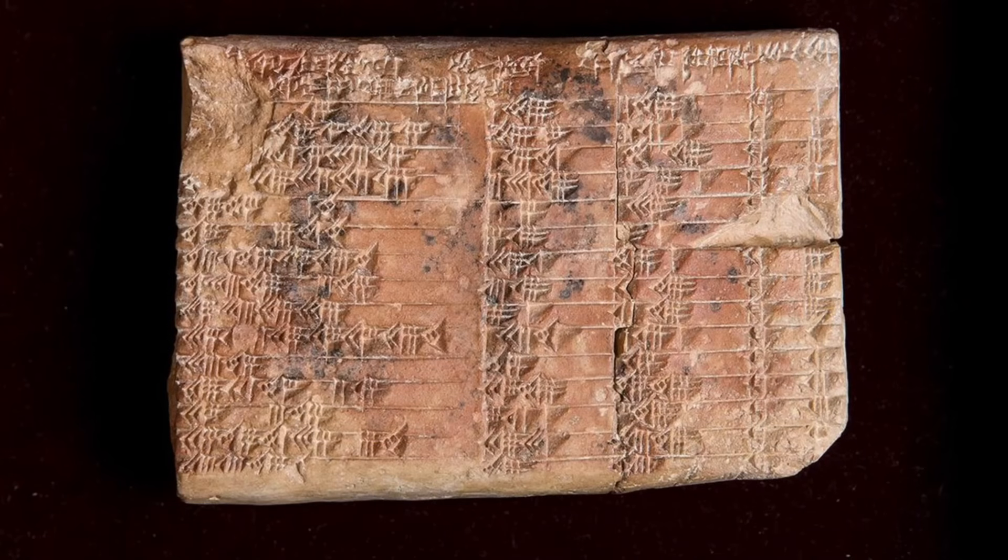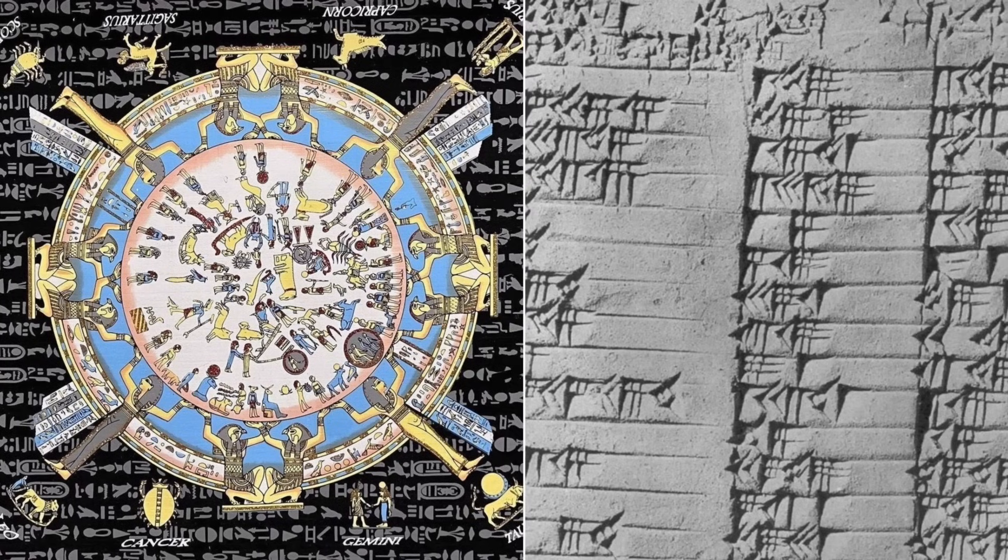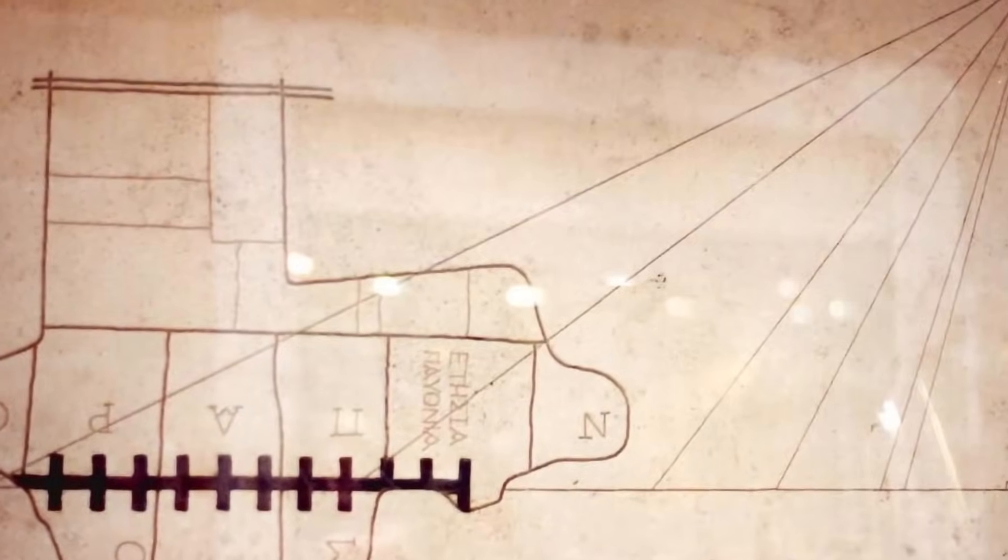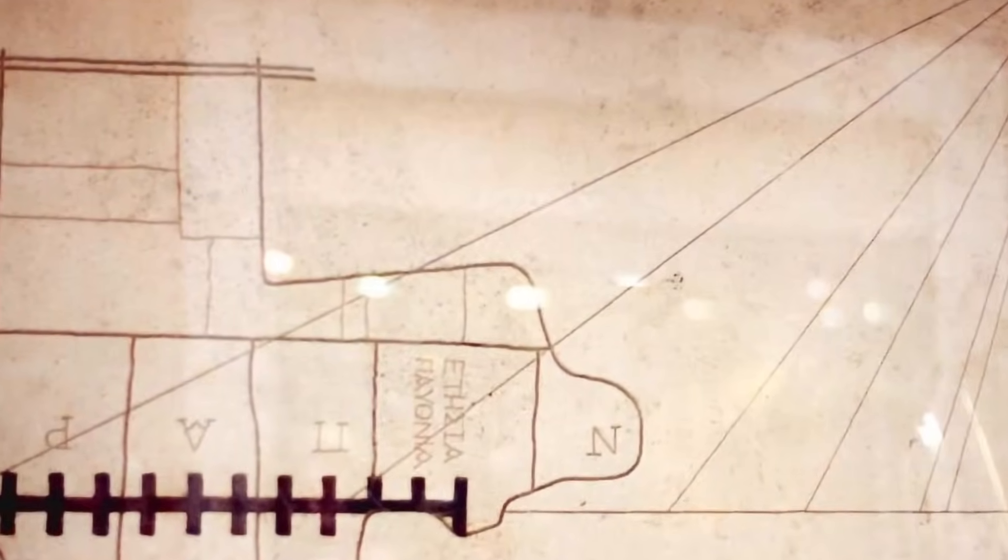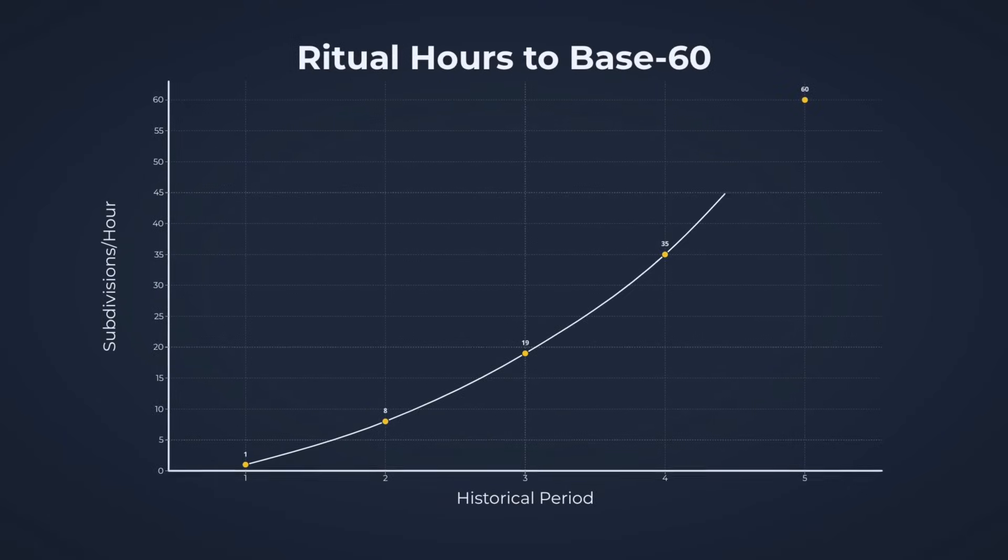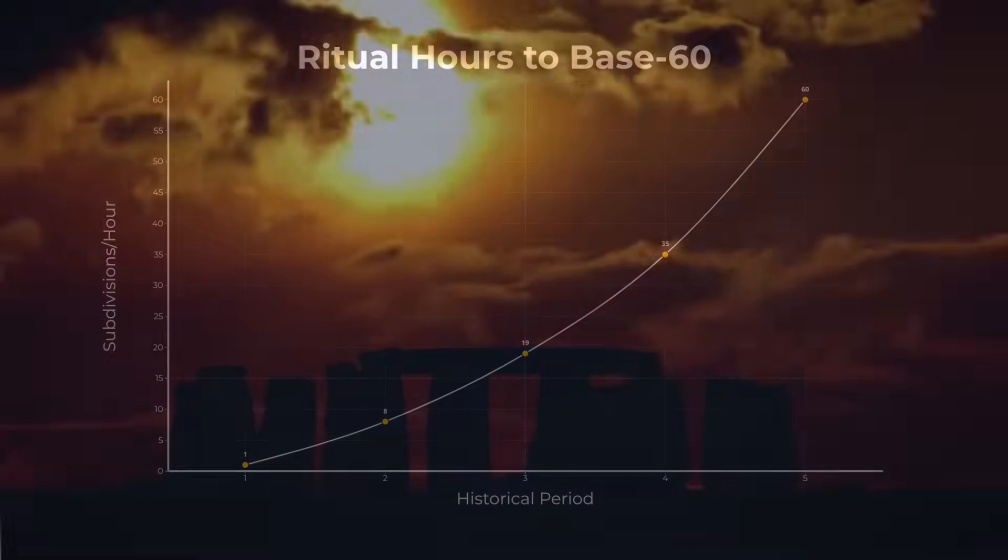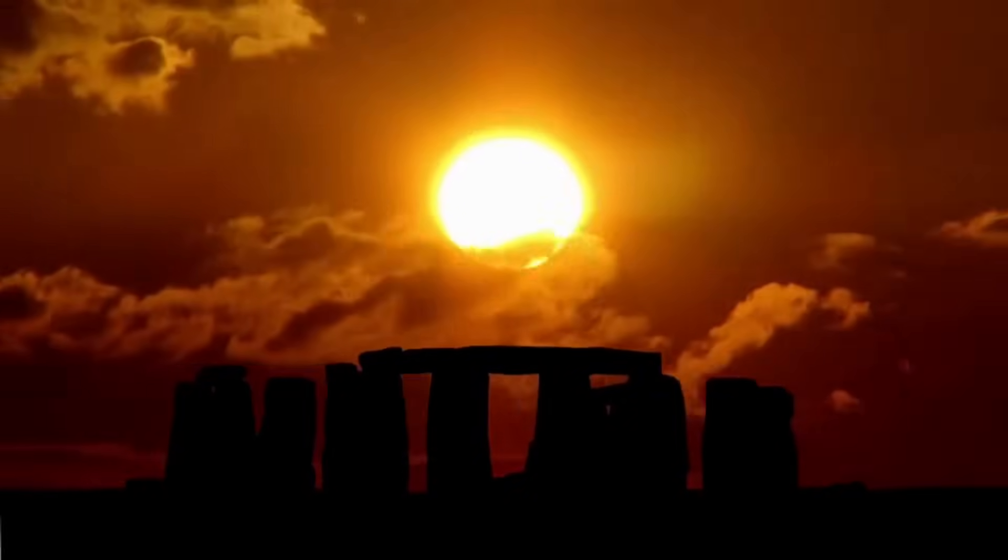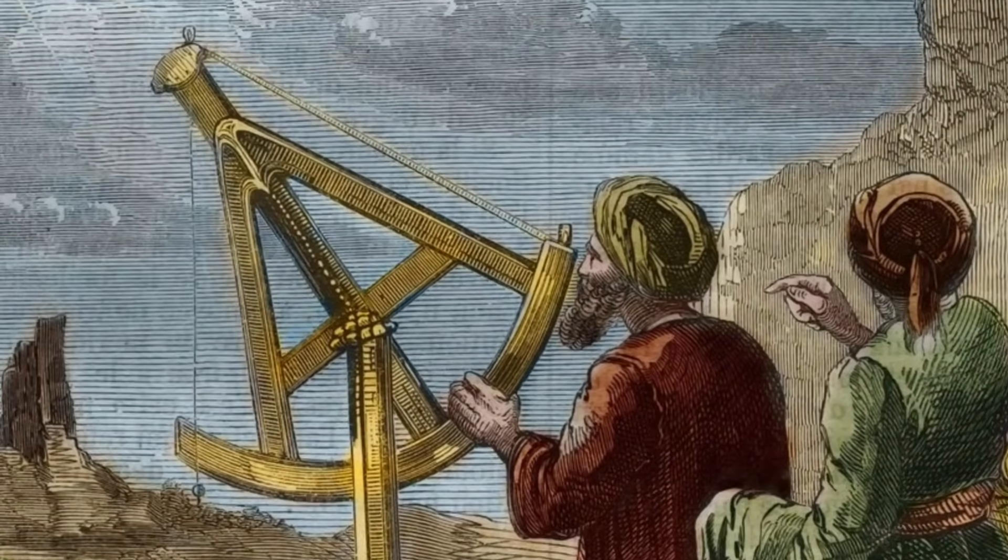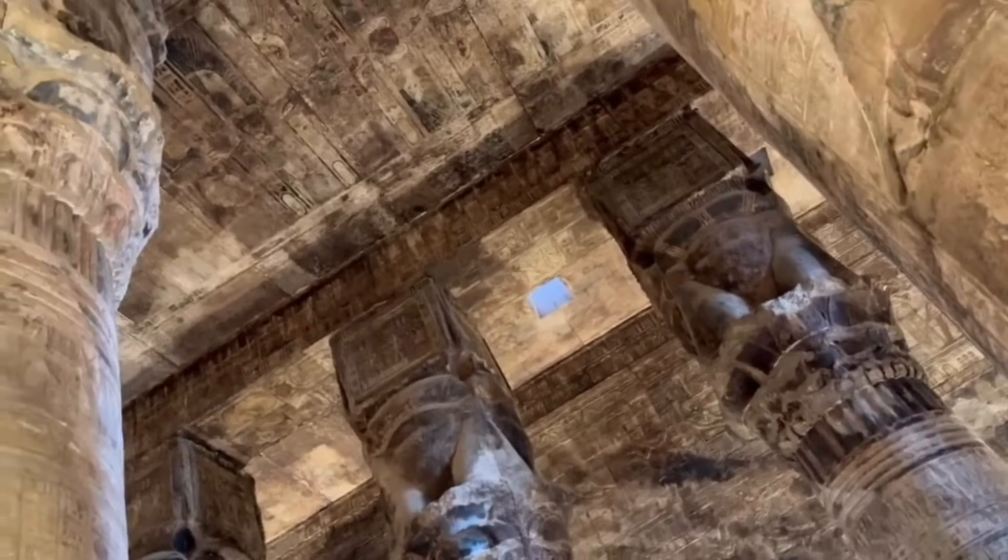While the Babylonians gave us a way to slice things finely, the Egyptians set the pattern for how we count the hours themselves. Their blueprint, 12 hours of day, 12 of night, became the skeleton of the day, a framework that would later meet the precision of base-60 math. The need for equal standardized hours would soon become obvious, especially for astronomers who wanted to measure time as reliably as they measured the sky.